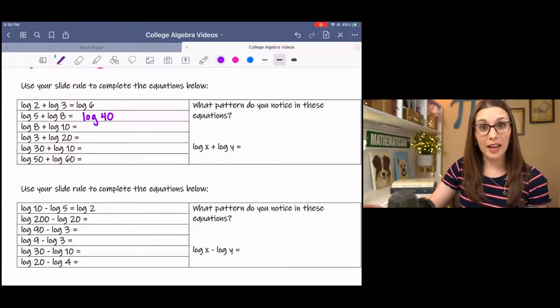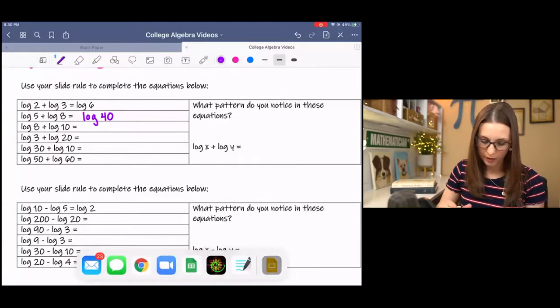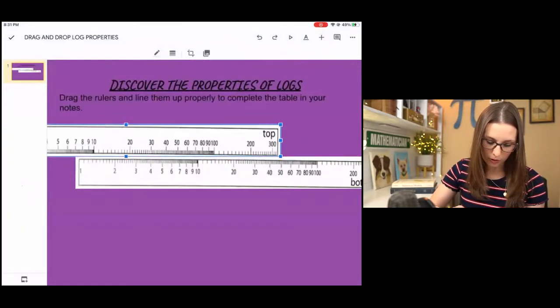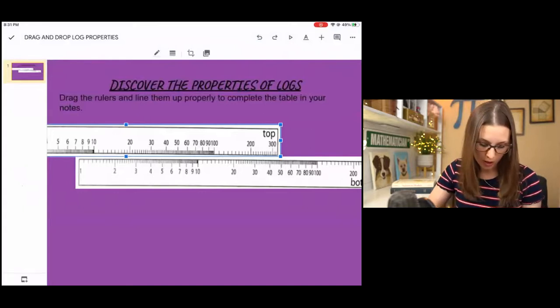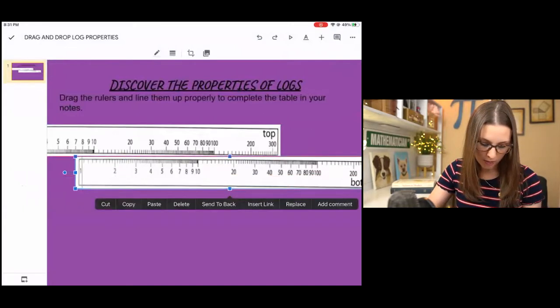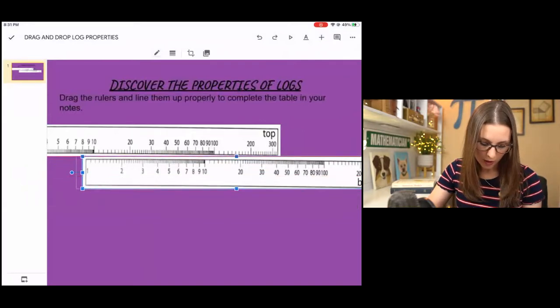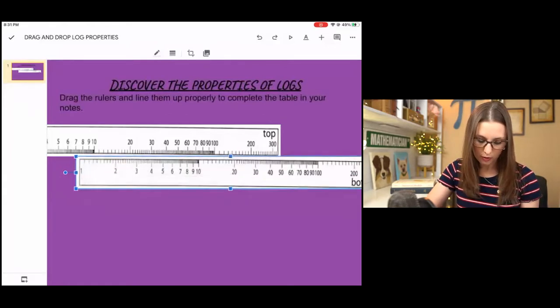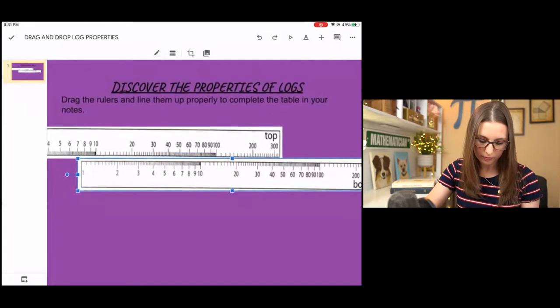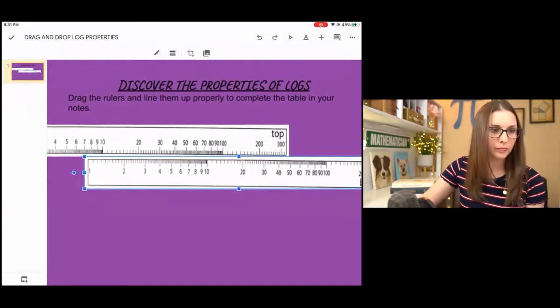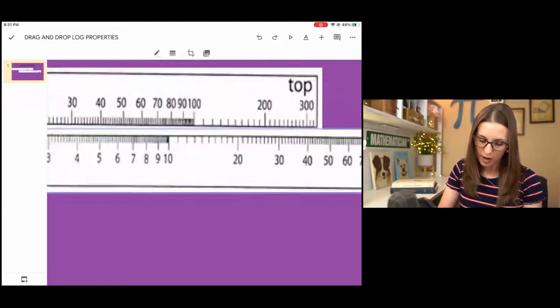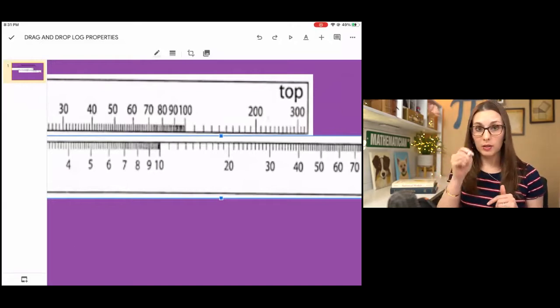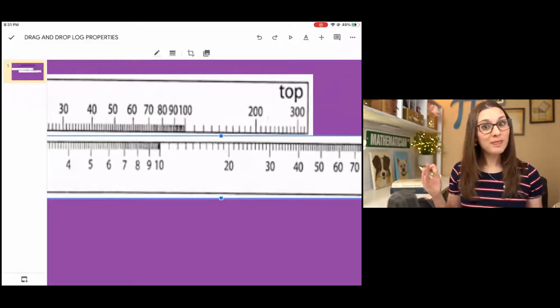Then we can do log 8 plus log 10. We're starting at log 8, I'm going to move it over so I have some more room. I'm lining up the bottom one. Log 8 plus log 10—this 10 looks to be lined up with log 80.